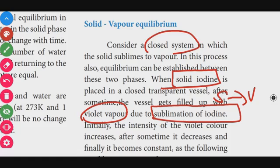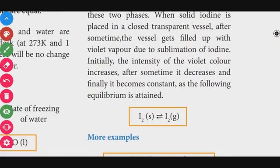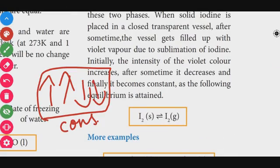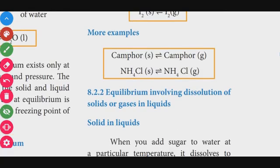The intensity of the violet color first increases, then decreases, and finally becomes constant. At this point, the rate of sublimation equals the rate of deposition — that is the solid-vapor equilibrium. Another example is ammonium chloride, NH4Cl, which also undergoes solid-to-gaseous phase change, going from solid phase to gaseous phase.